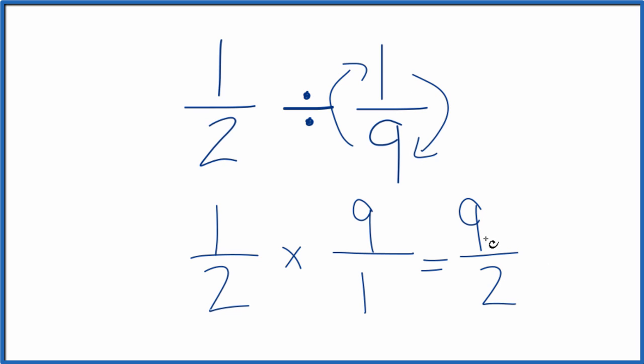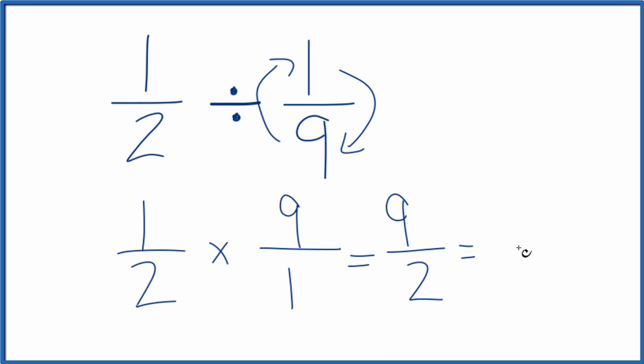This is an improper fraction, so we can change this to a mixed number. Two goes into nine, two times four is eight. So four times with one left over, so we'll call it four and one-half.